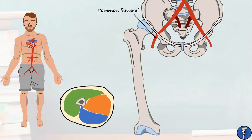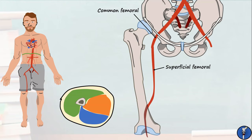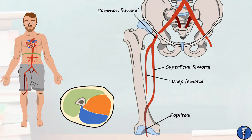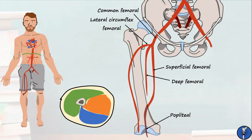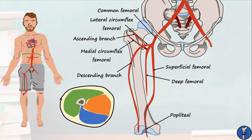The common femoral produces two main branches to the leg. The first is the superficial femoral artery, sometimes just called the femoral artery, which is largely responsible for the blood supply of the anterior compartment of the thigh and passes posteriorly to the knee to become known as the popliteal artery. It also produces a branch known as the deep femoral or profunda femoris artery, which produces branches mostly responsible for supplying the posterior compartment of the thigh. Branches of the deep femoral artery include the lateral circumflex femoral, which has an ascending branch to the hip and a descending branch, and the medial circumflex femoral artery, which also supplies the hip.